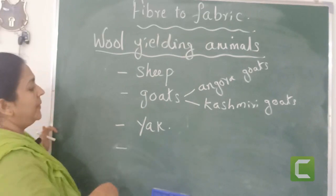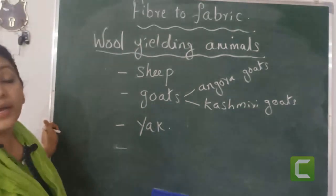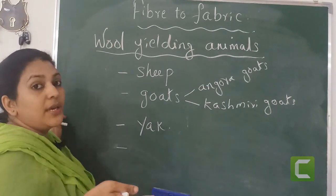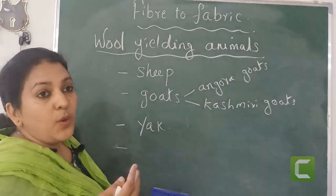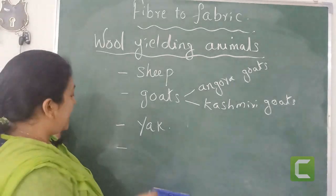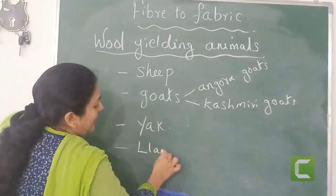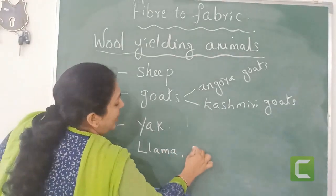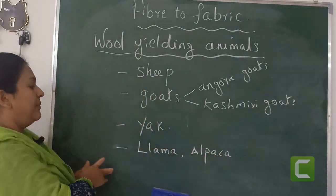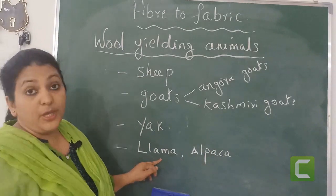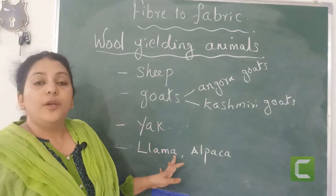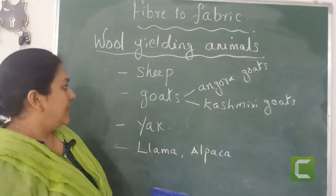Next one is alpaca and llama from South America. These animals are not familiar for us, but in South America you can see a lot of such type of animals — llama and alpaca. Alpaca are some of the animals, similar to a sheep. They are providing us wool.